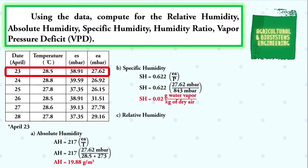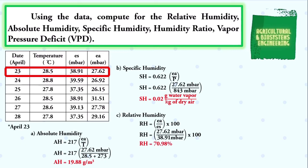Next, we solve for the relative humidity. Using the formula RH = (ea / es) × 100, we substitute: RH = (27.62 millibars / 38.91 millibars) × 100. We simply solve and we have a final value for our relative humidity of 70.98 percent.